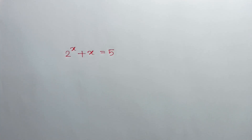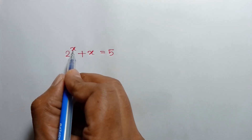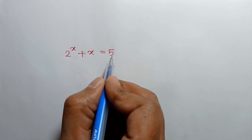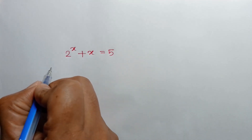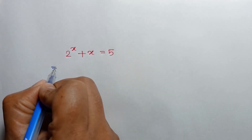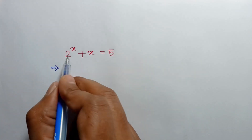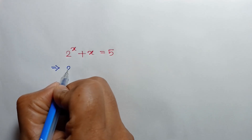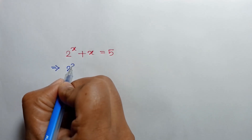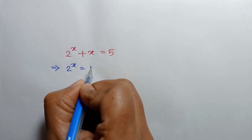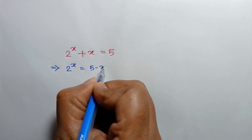Hi everyone. In this video, I am going to show how to solve this exponential equation: 2 to the power x plus x is equal to 5. Taking x to the right side, we can write 2 to the power x is equal to 5 minus x.